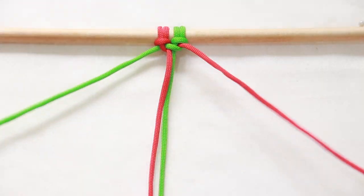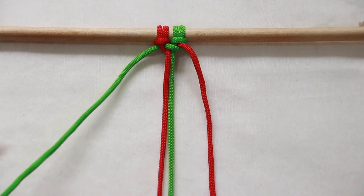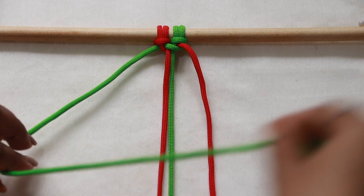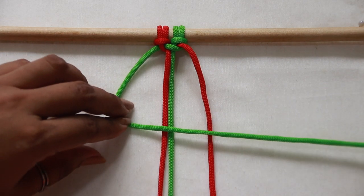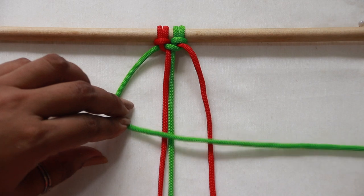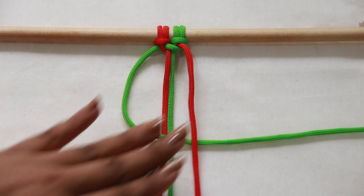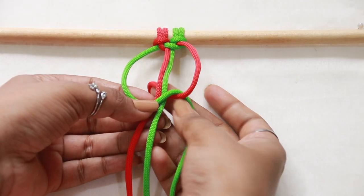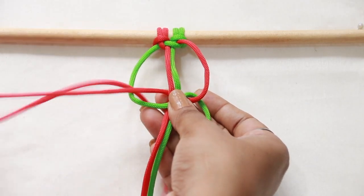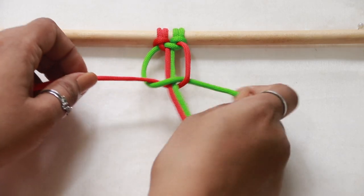Now we have half of a square knot. For the other half, repeat the same thing from the other side. This time the left working cord is in the figure four underneath the right working cord. Pass the same right working cord underneath the filler cords and out through the loop formed on the left side.